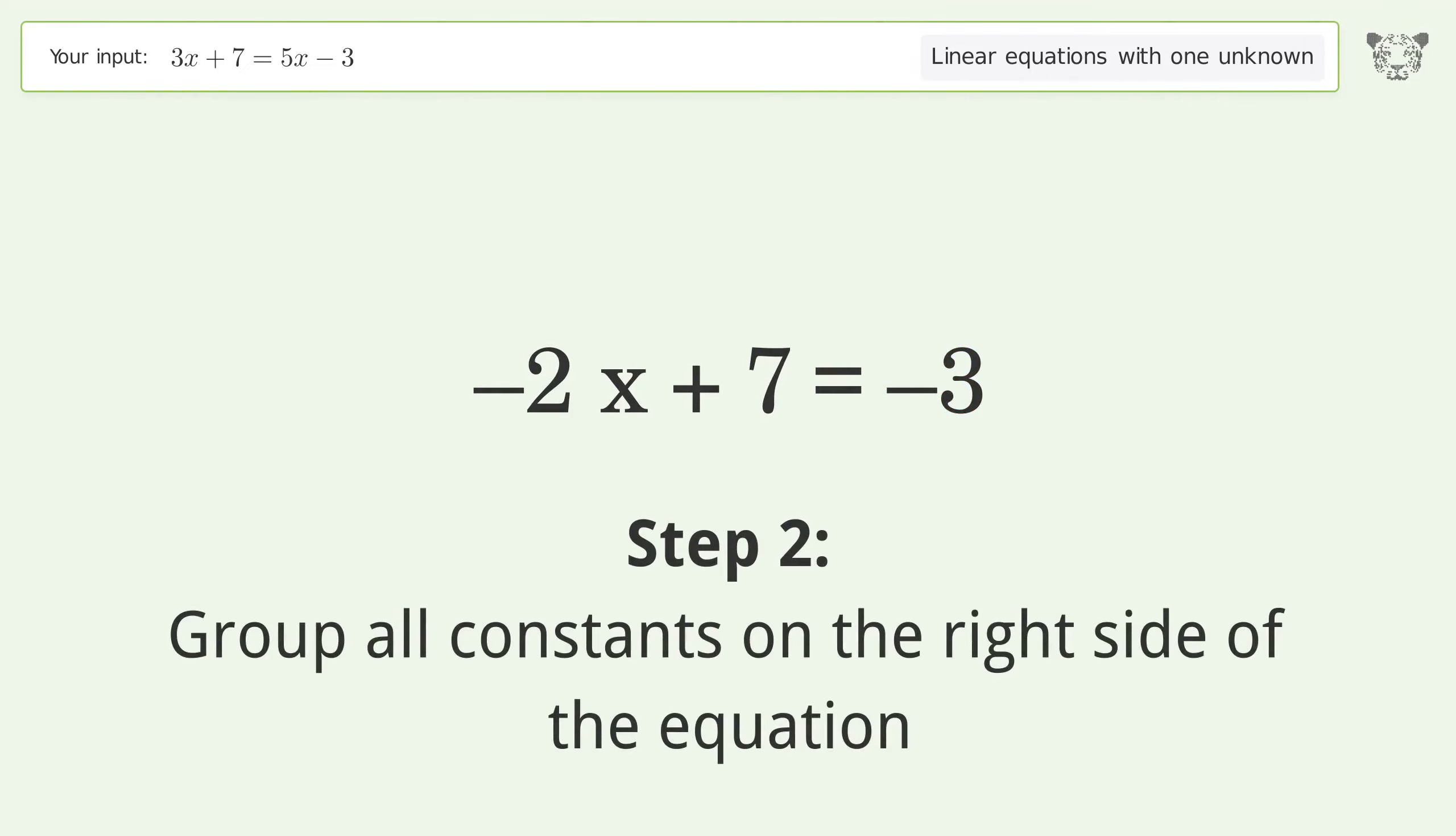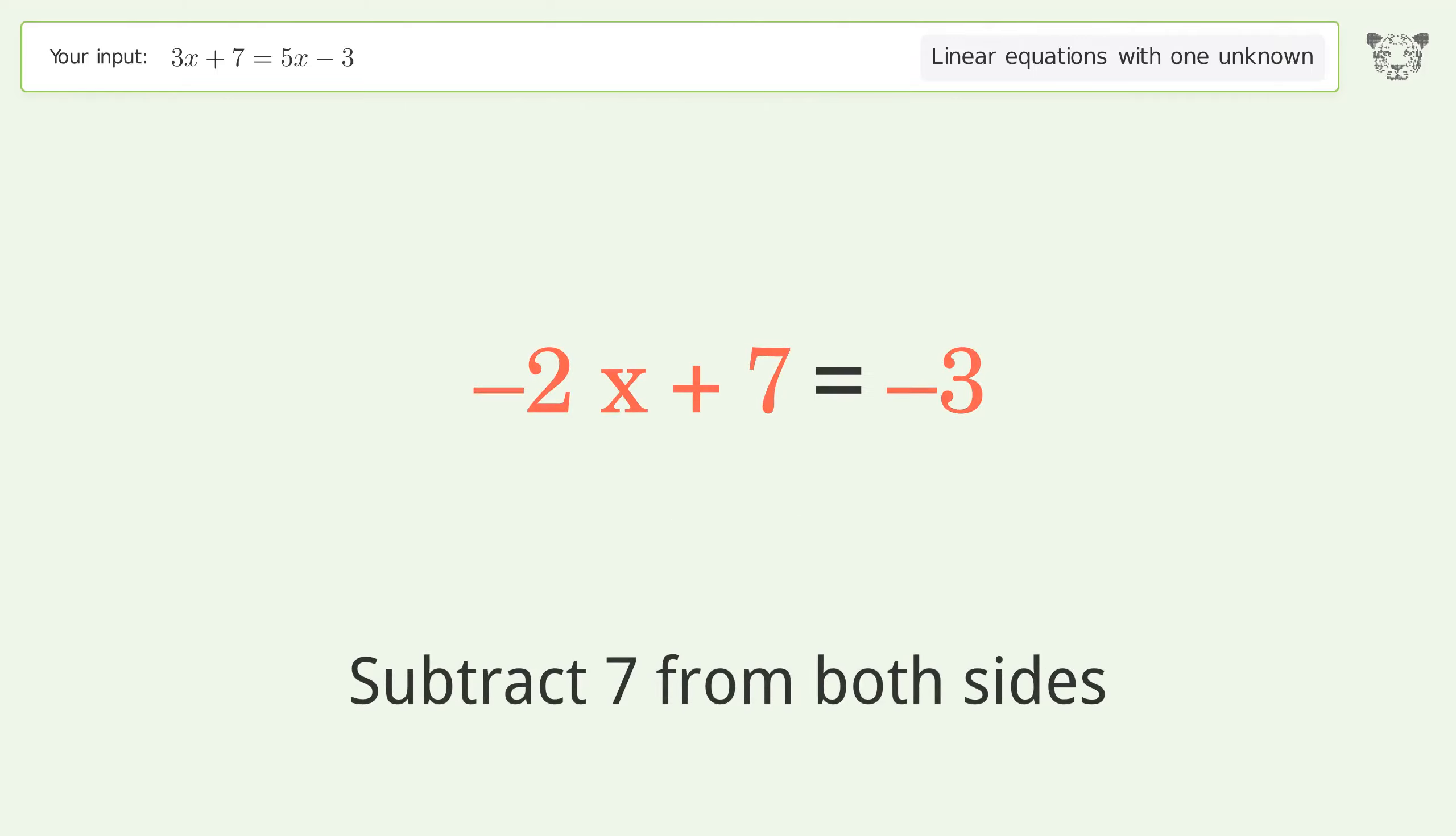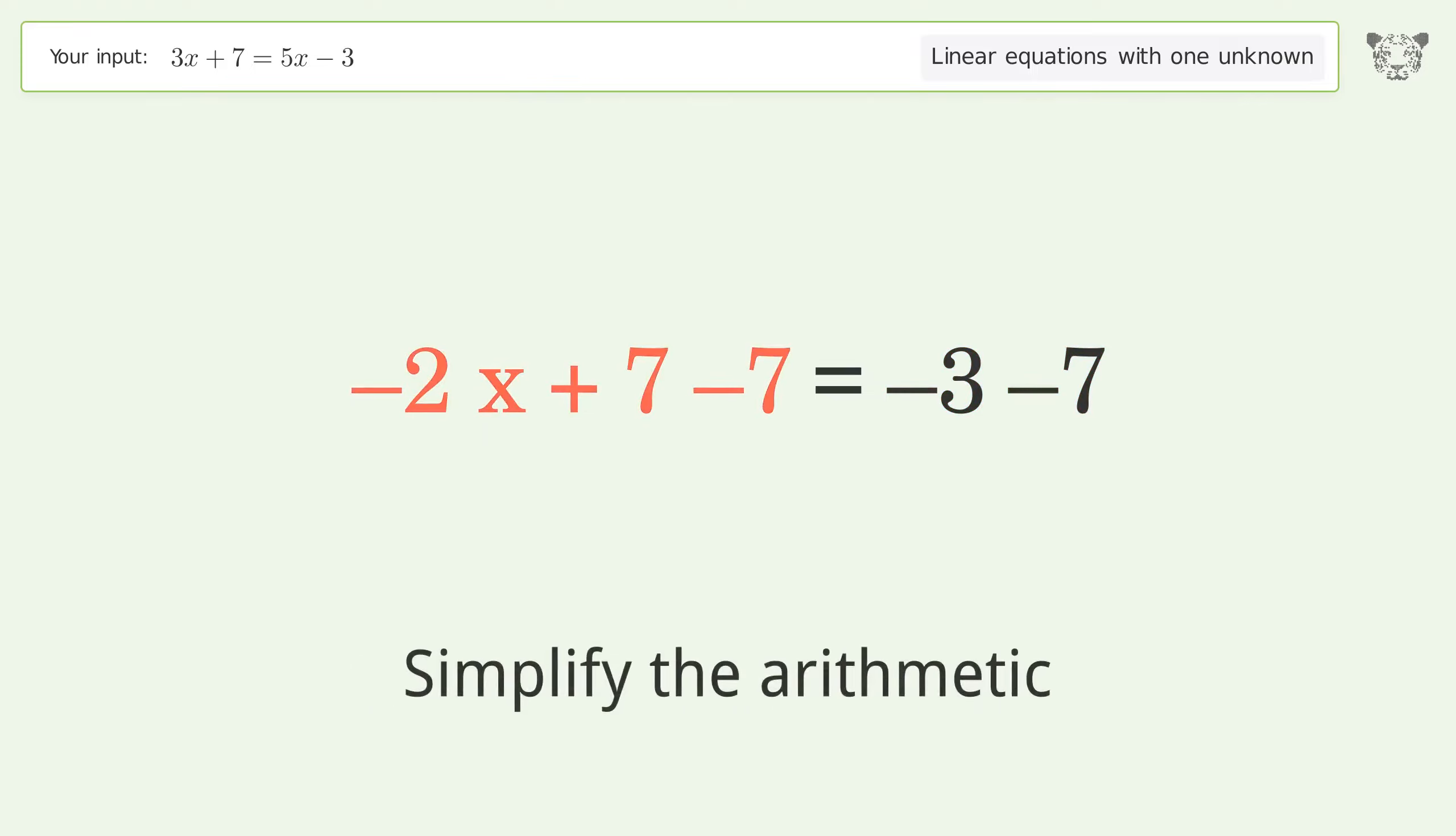Group all constants on the right side of the equation. Subtract 7 from both sides. Simplify the arithmetic.